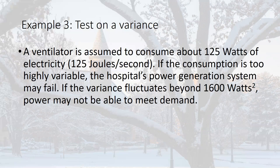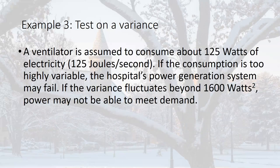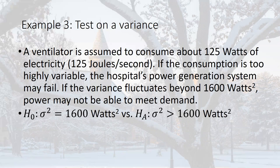Now a variance test example. Assume a ventilator consumes about 125 watts of electricity. If consumption is too variable — specifically if variance exceeds 1600 watts squared — the power generation system may fail. Assume power is normally distributed, which is a required assumption for this type of test. From 17 ventilators, we observe power consumption data. The hypothesis is: null that variance equals 1600 watts squared, versus alternative that variance is greater than 1600, with alpha equals 0.05.